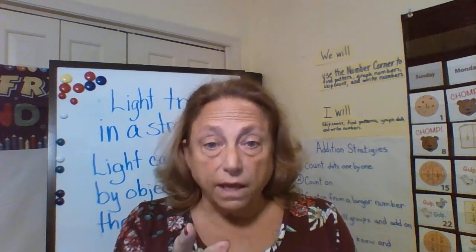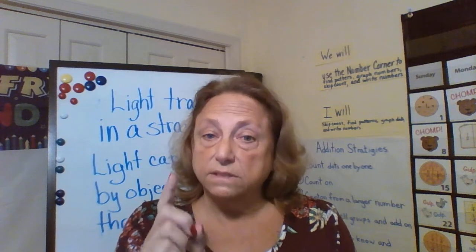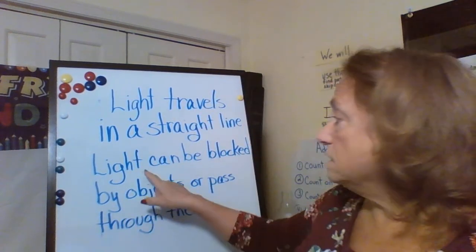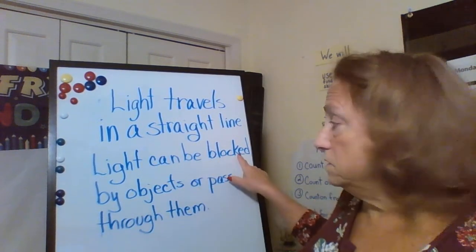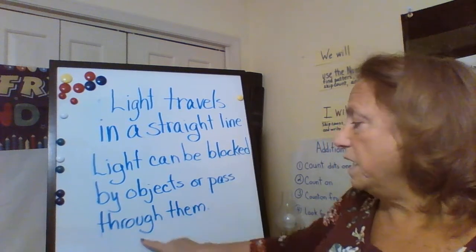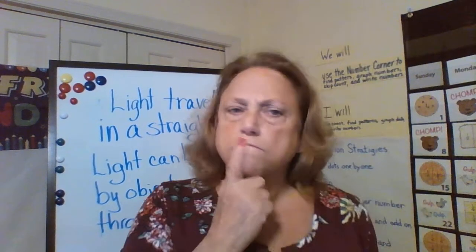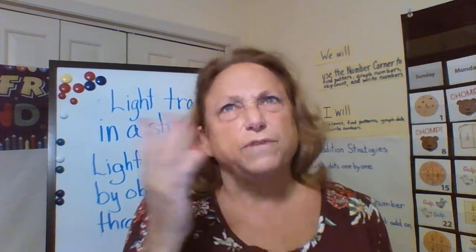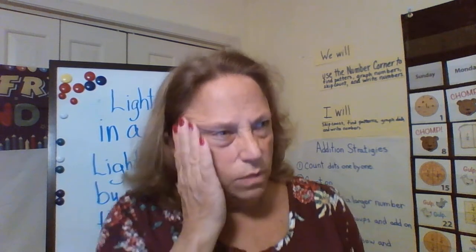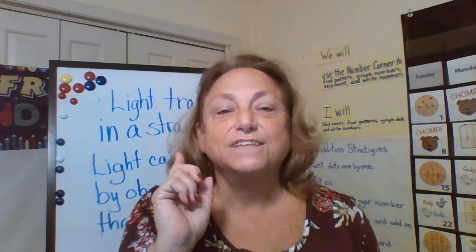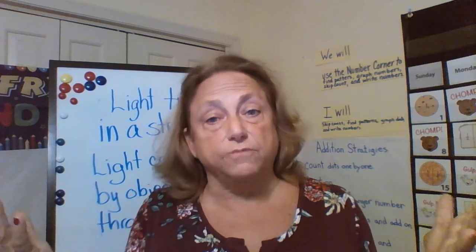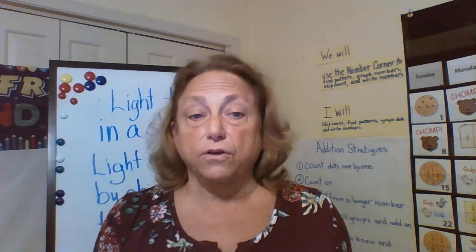And then we're going to do something else. Next, we are going to say that light can be blocked by objects or pass through them. If it's blocked by objects, what was that called? Shadows! If you have a solid object in front of some light, you get shadows.